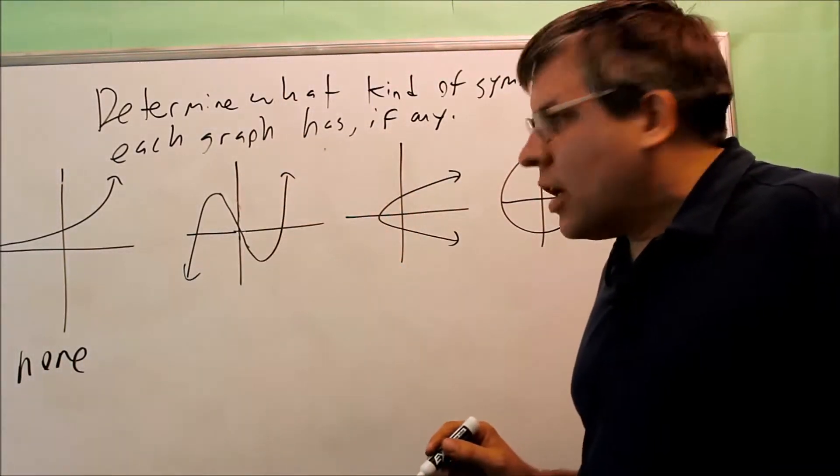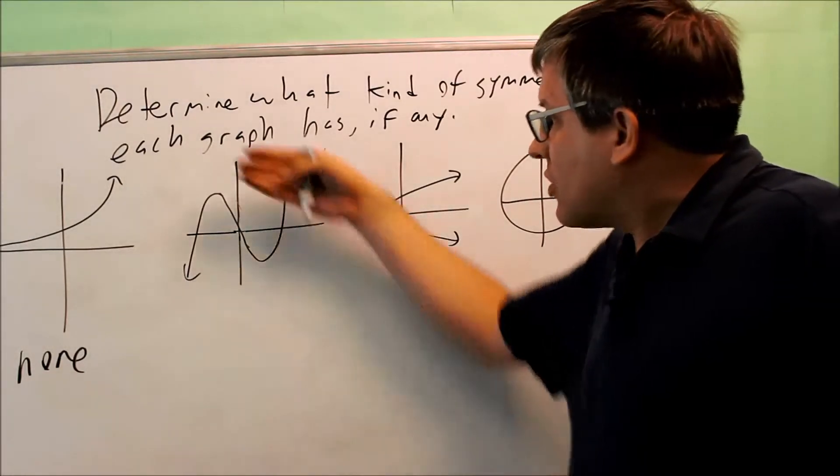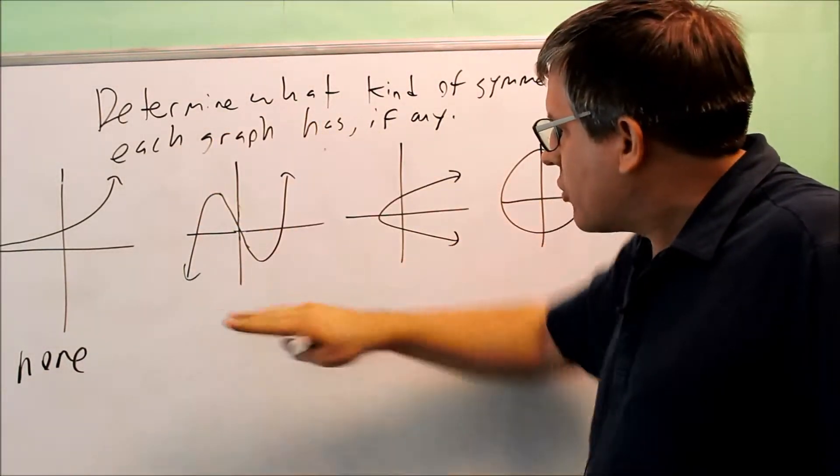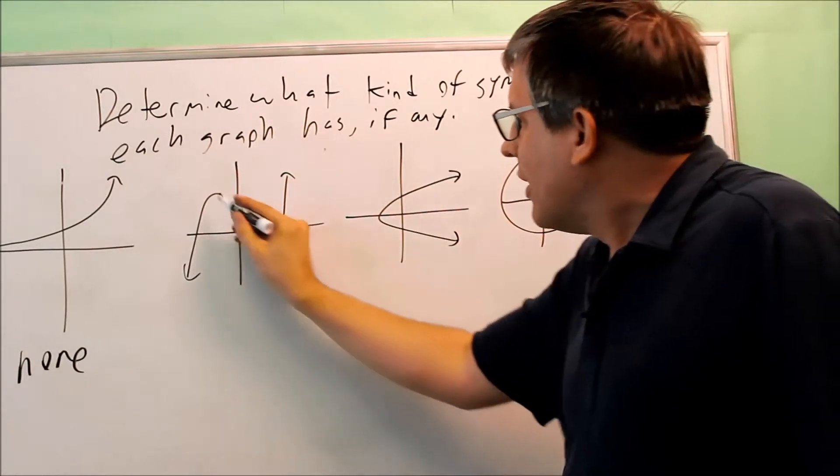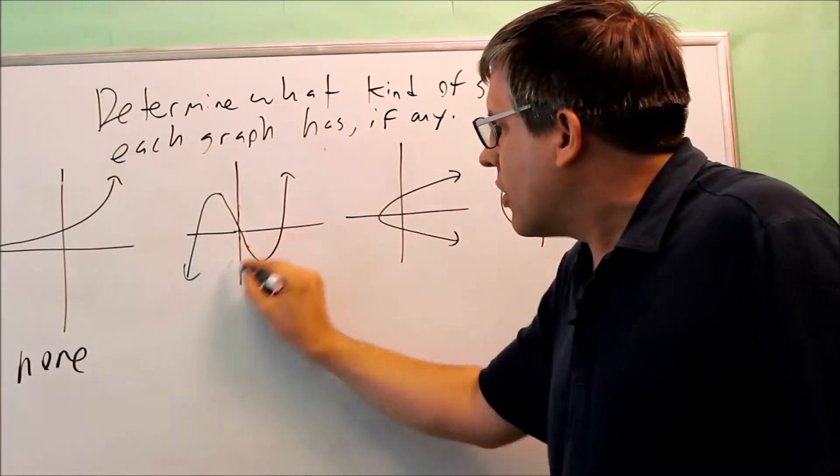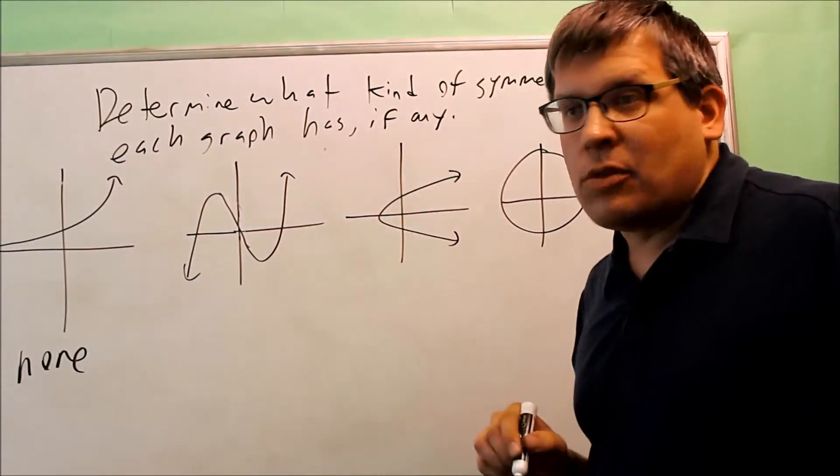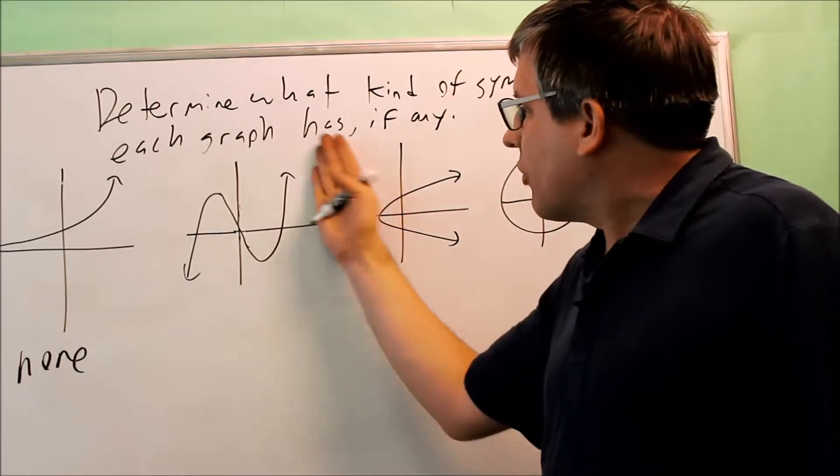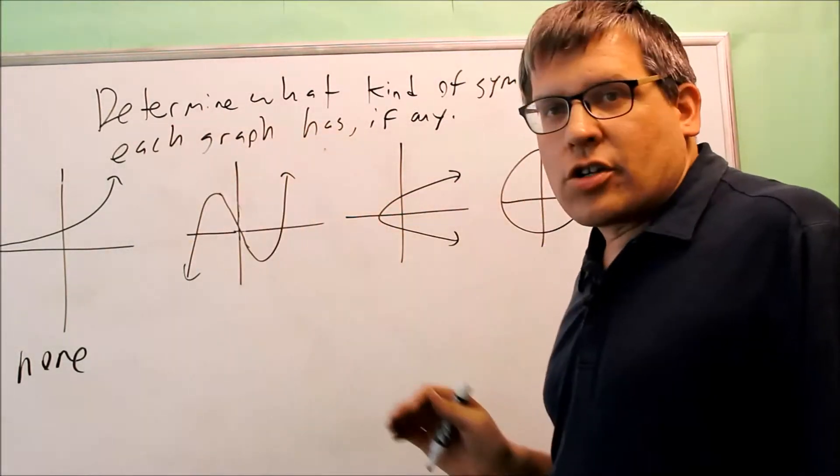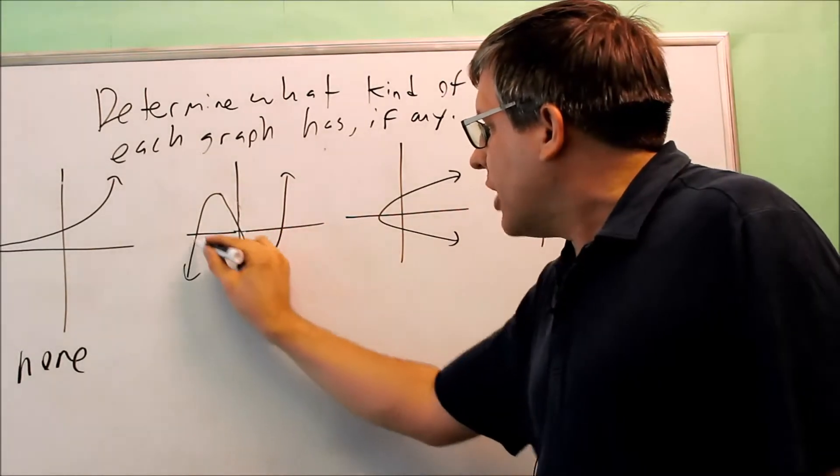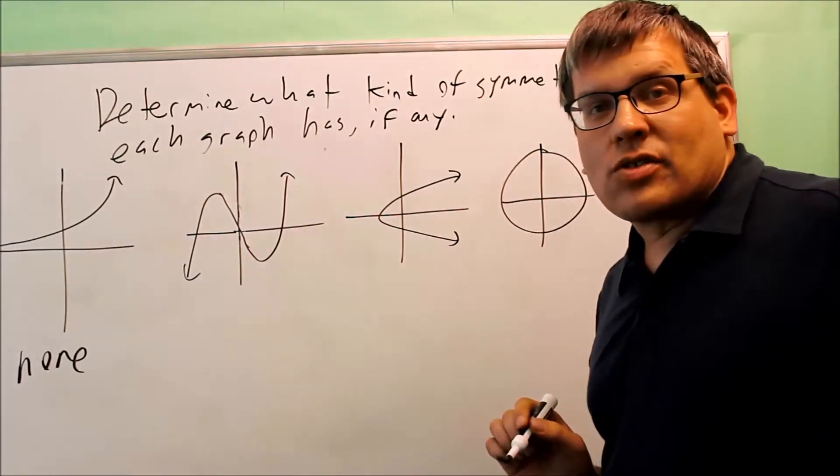This next one, I want to check for x-axis symmetry. It means I'm going to fold the graph over this direction. Now if I fold this part over, this part will end up looking like this down below. So it does not overlap, does not have x-axis symmetry. Y-axis, if I fold it over this direction, this part will end up down below here. It's not going to have that symmetry either.